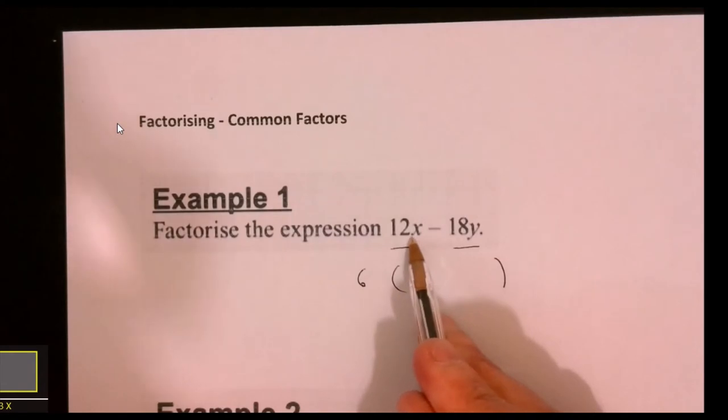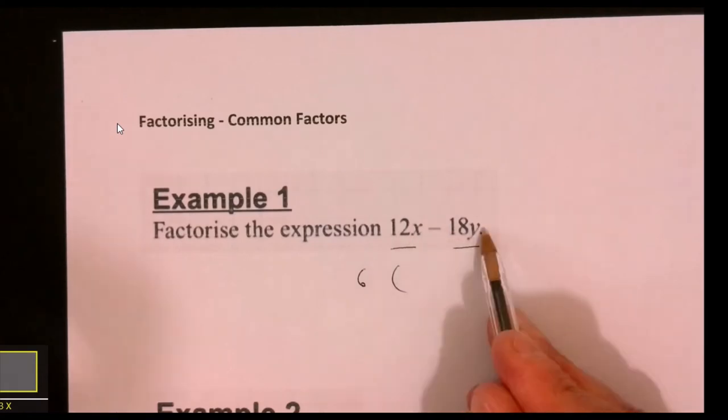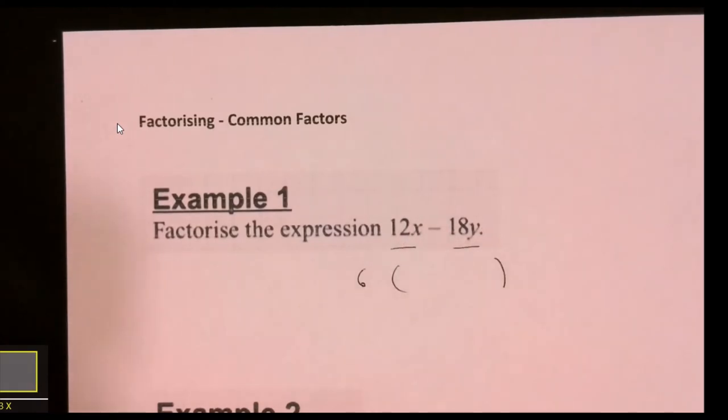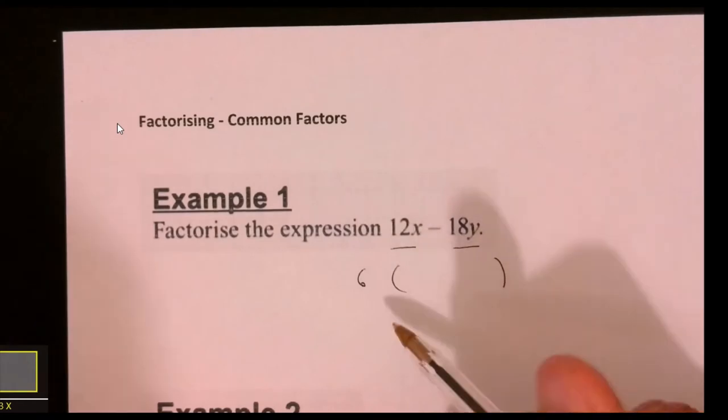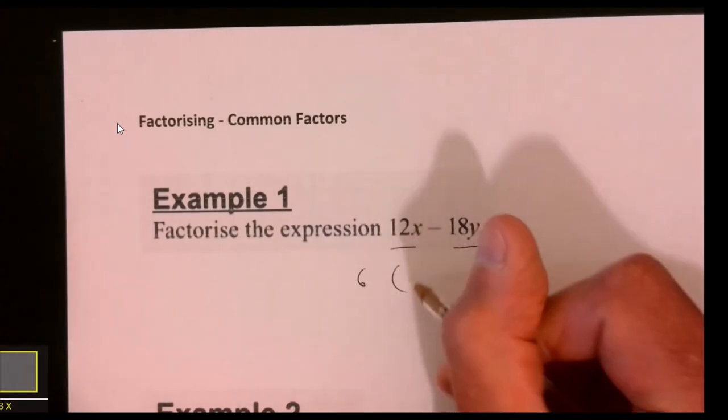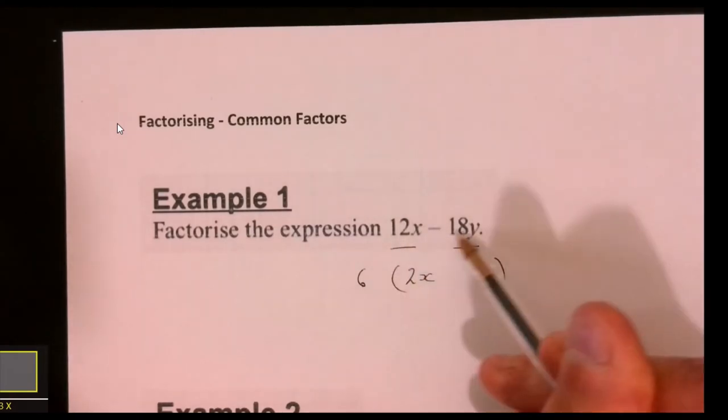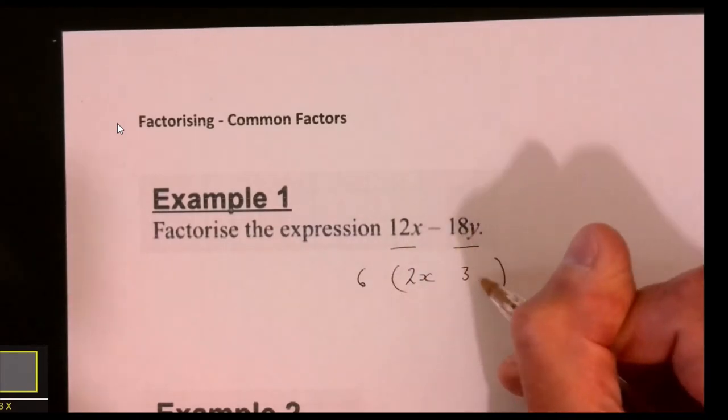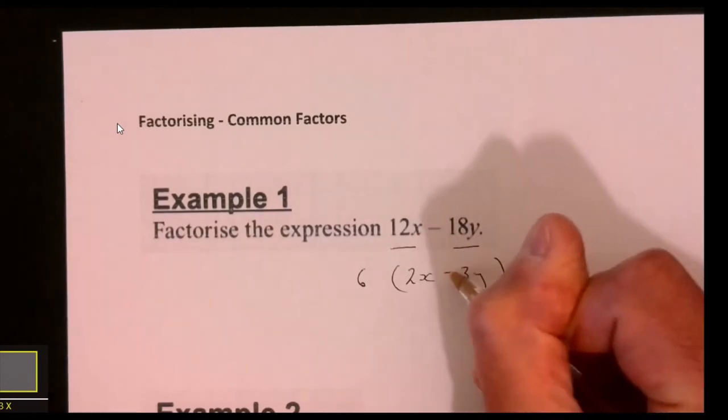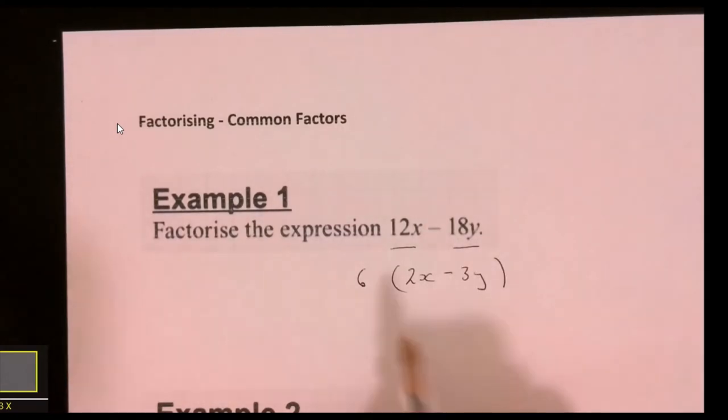There's an x and a y, so there's nothing going on with the letters. So 6 multiplied by 2 is 12, so that'll be 2x, and 6 multiplied by 3 is 18, and the y is still there. That's still going to be negative. If I multiply it out, 12x minus 18y, it works. Done it.